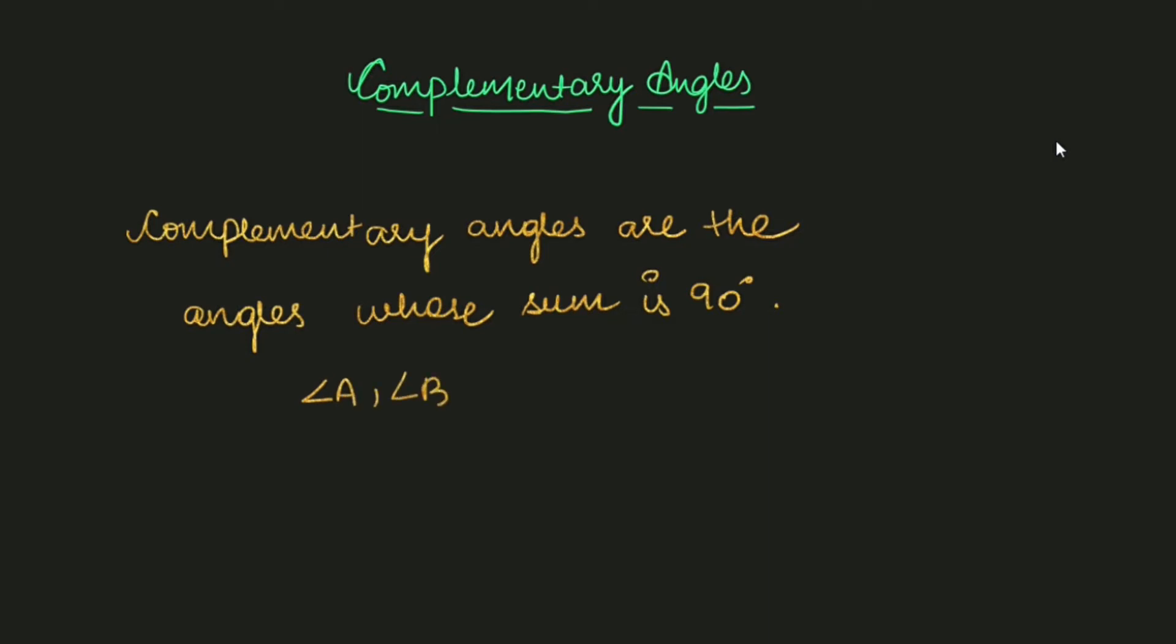so what is the necessary condition here? The necessary condition is that jab hum in dono ko add kareenge, in dono angles ko, to in dono ka jo sum hai wo 90 degree aana chahiye. So you just have to remember that any two angles whose sum is 90 degrees, then we can call those angles as complementary angles.